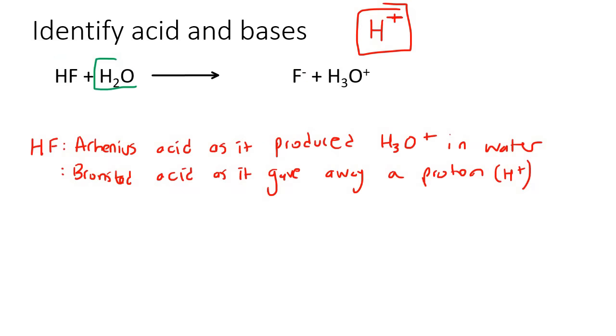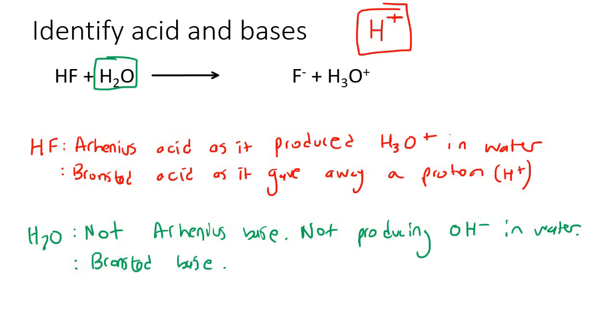Now I want us to focus on this H2O. That H2O is not an Arrhenius base. Remember that our Arrhenius base has to produce OH-. We can't see any OH- here. So it's not an Arrhenius base because it's not producing OH- in water. And that is what an Arrhenius base does. It is going to be a Bronsted base as it accepts a proton. Can you see that it accepted a proton from the HF?